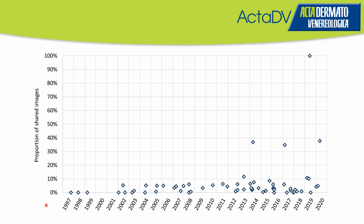In this figure you can find all the investigations represented as squares. As you can see, the investigations range from 1997 to 2020. On the y-axis you can see at what proportion rate the images were shared. Only one investigation included the complete data set.